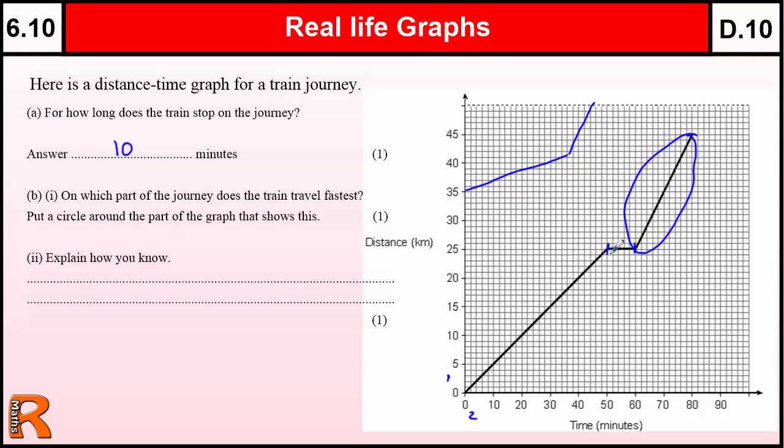You could actually work out the speed of the train at each section, so we've got this part of the train where we're going 25 kilometres in 50 minutes. So we would go 5 kilometres in 10 minutes, or 30 kilometres per hour. We don't really need to do that. All we need to do is say that we know it's faster because a steeper line or steeper slope of the line means a faster speed.